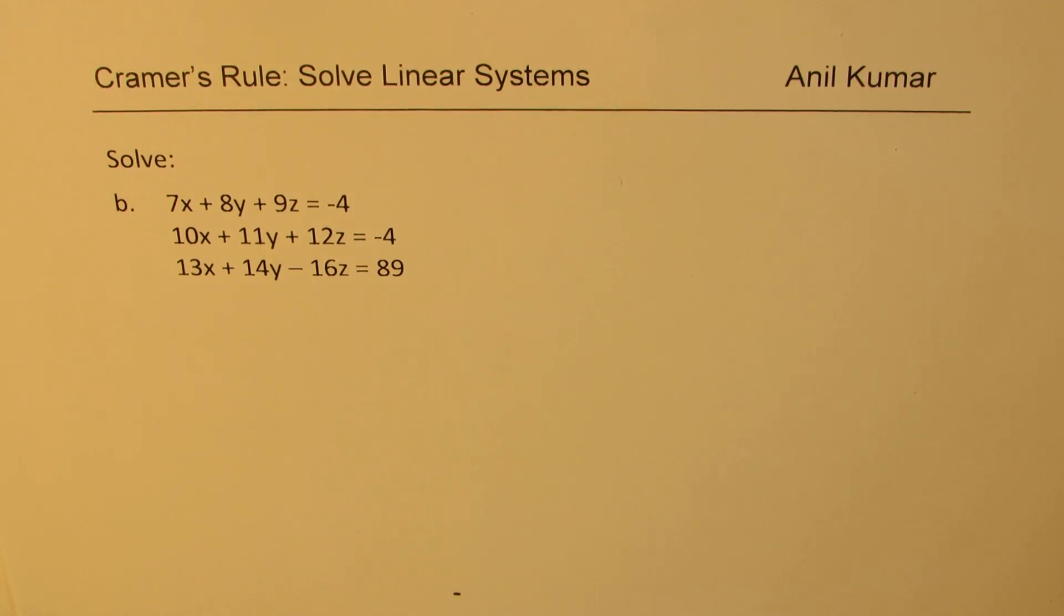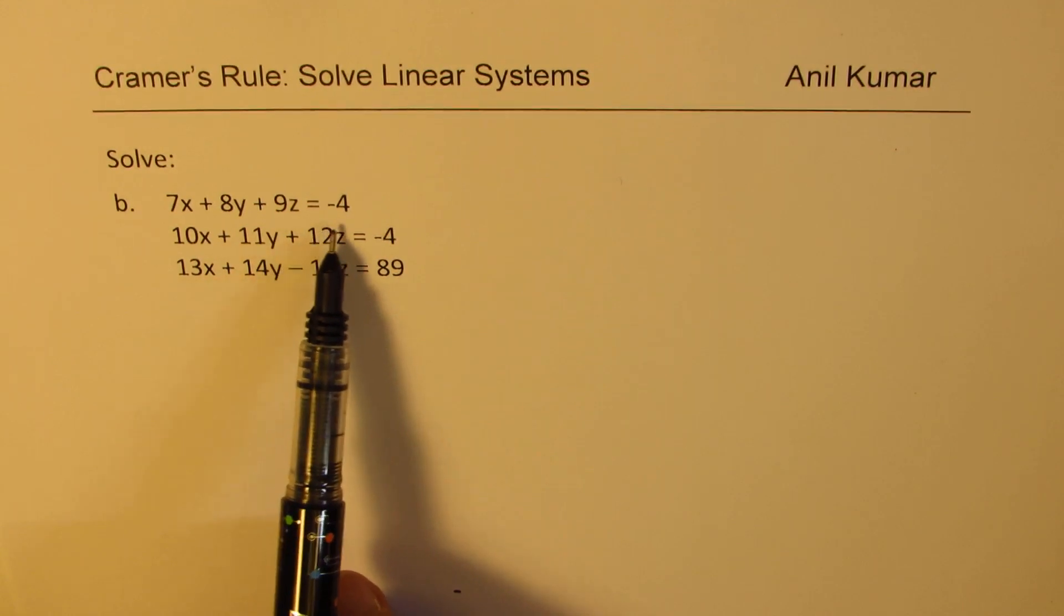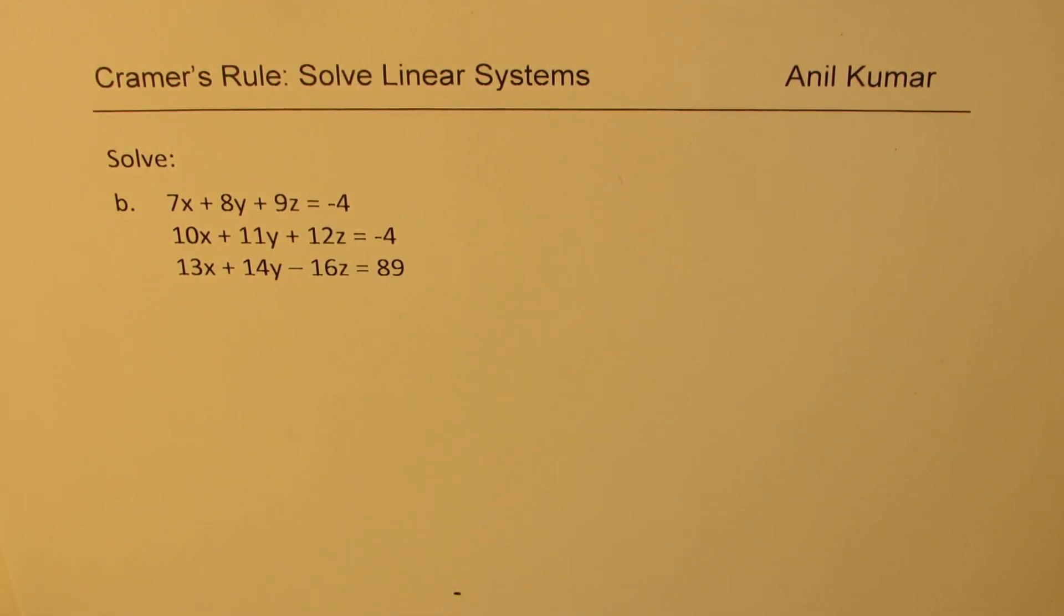You will actually notice that this is a very efficient way of working. And if your calculator is allowed, simple calculations, just multiplications and subtractions to be done to get the answer. So, let's see how to find the solution of a linear system involving n variables and n equations. This time, it is three variables and three equations. The equations for you are 7x + 8y + 9z = -4, 10x + 11y + 12z = -4, 13x + 14y - 16z = 89.